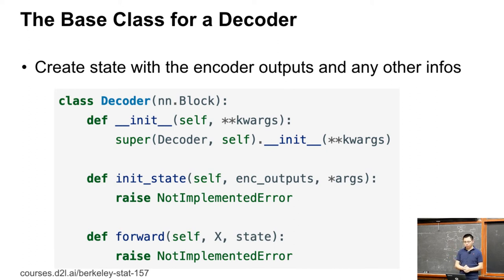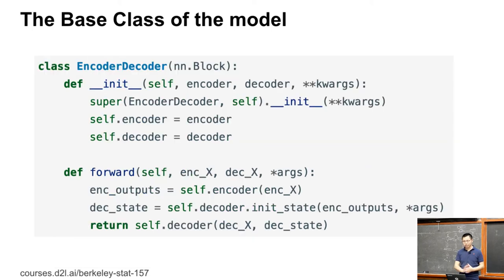So once we have the decoder encoder, we can implement the model. The model has two parts. The init function will give you both definitions for encoder and decoder. And the forward pass will give the encoder input X, the decoder input another X, and some additional things.